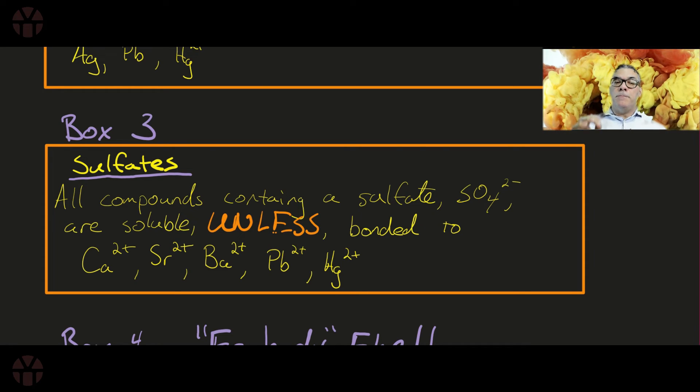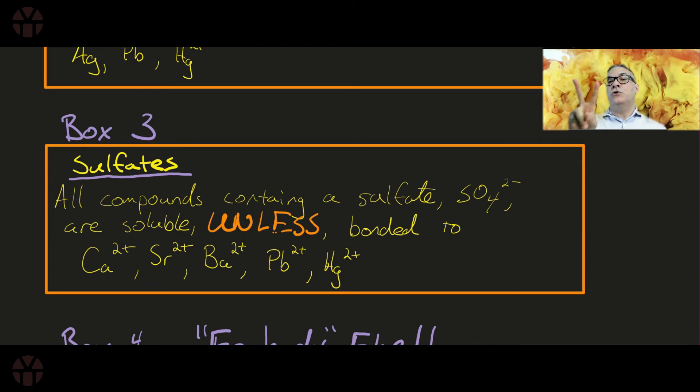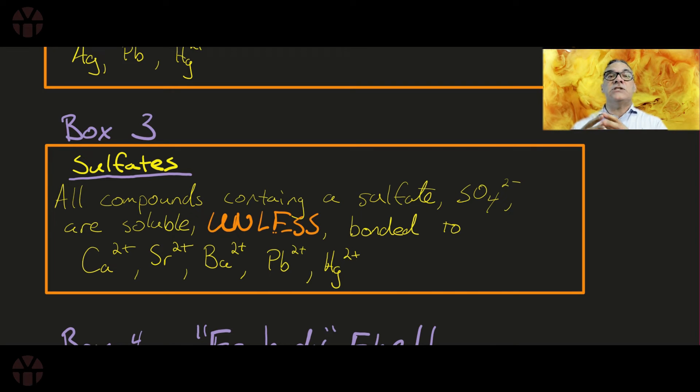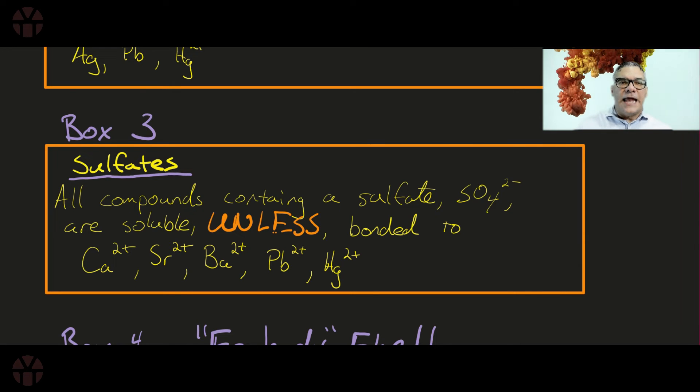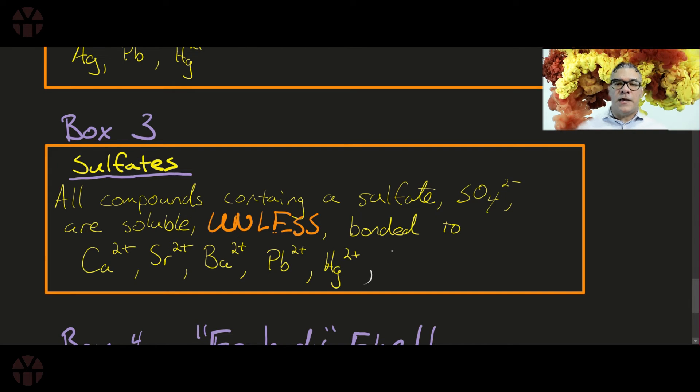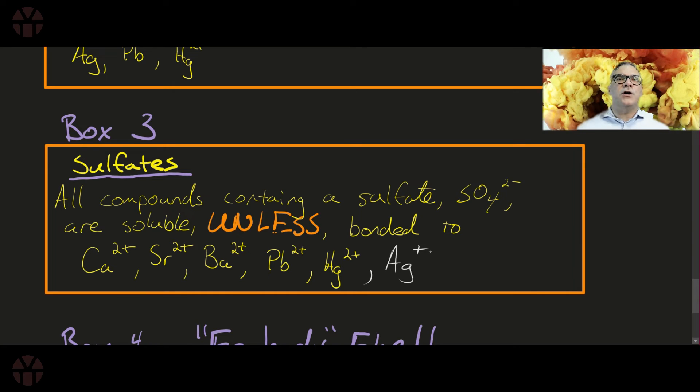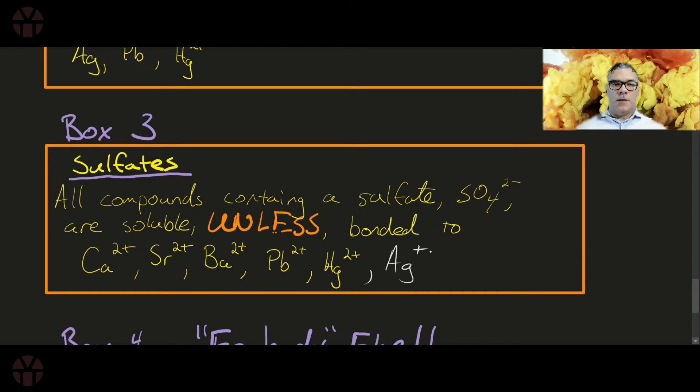But then the ones that are exceptions are going to be barium, strontium, and calcium. And if you notice, they're in group 2 of your periodic table. They start at the bottom with barium, and then you have strontium, and then you have calcium. So those three are going to be insoluble - in other words, they will not dissociate in water when bonded to sulfate. The last one that I'm going to add to this, kind of a late add, but he also is going to be one that typically is going to be very difficult to dissociate with the sulfate is going to be my silver ion.